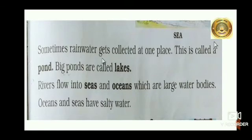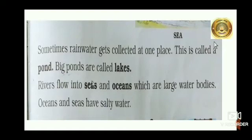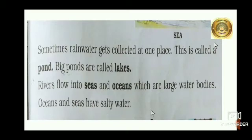Sometimes rain water gets collected at one place. This is called a pond. Big ponds are called lakes. Rivers flow into seas and oceans, which are large water bodies. Oceans and seas have salty water.